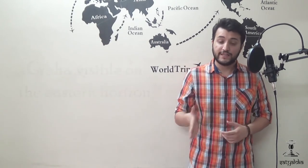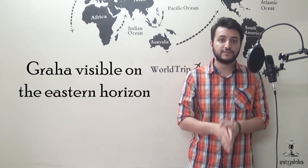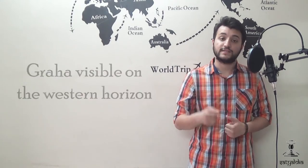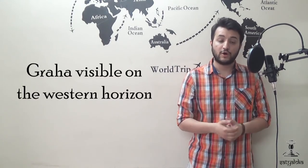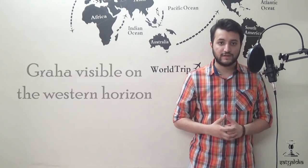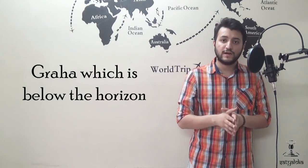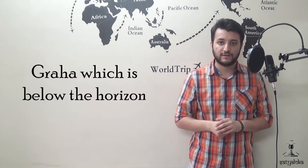In the fifth house the Graha visible on the eastern horizon is invited. In the sixth house the Graha visible on the western horizon is invited. Finally, in the seventh house the Graha which is below the horizon is invited.